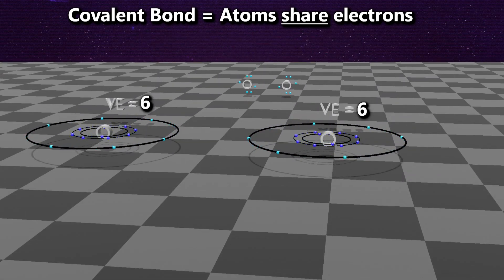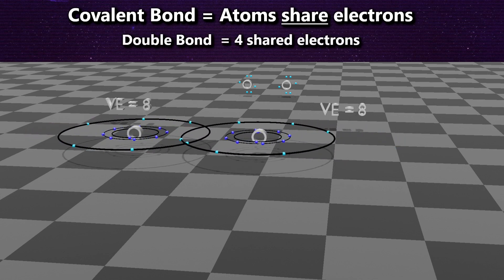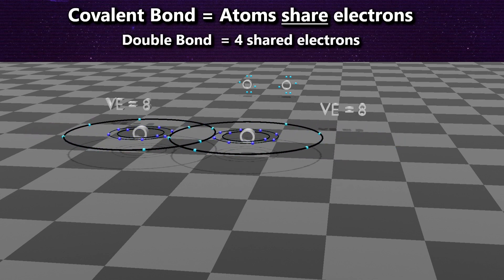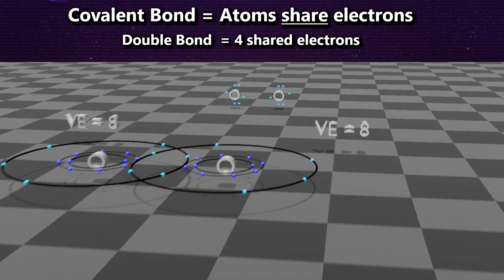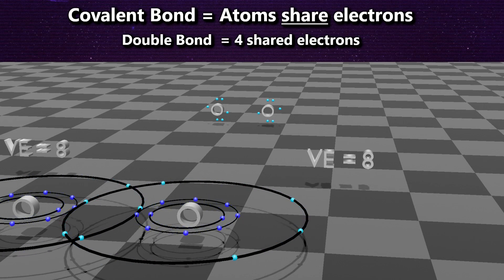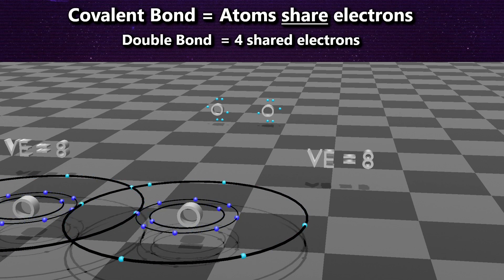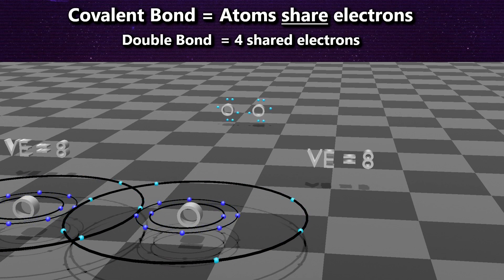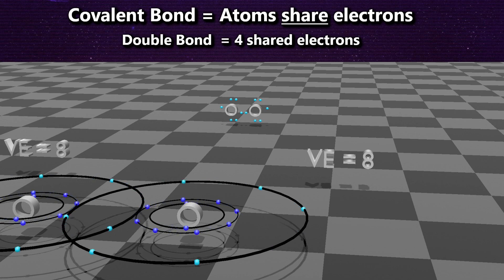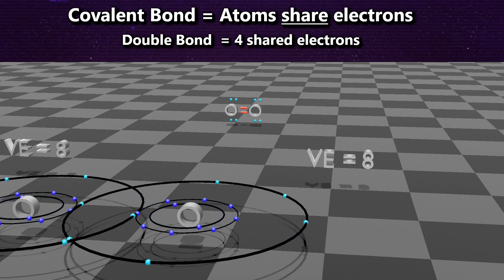The double bond occurs when we share four electrons. In this example, we have two oxygen atoms that both have six valence electrons. When they bond together, they share four electrons, fulfilling the octet rule. The Lewis dot structure shows this clearly — four electrons are shared in the middle, and counting those four electrons for both atoms gives each 8 electrons in their valence shell. The double bond is symbolized by two bars between the atoms.